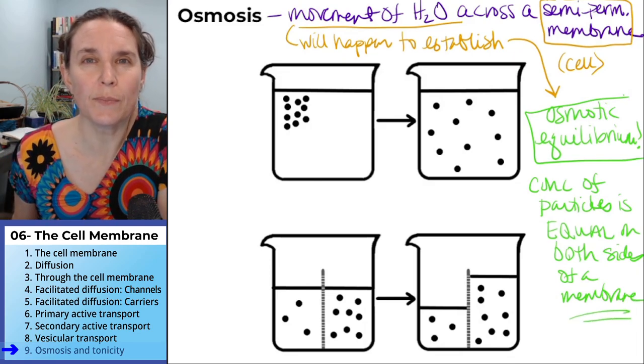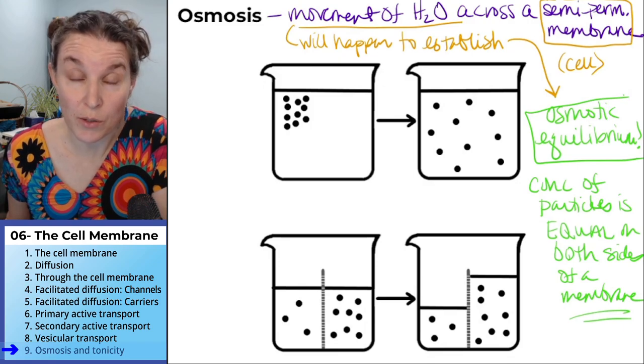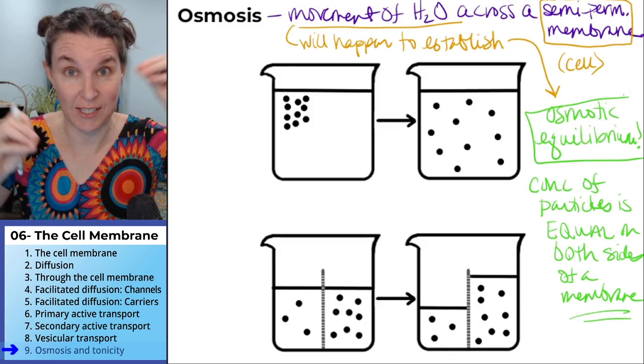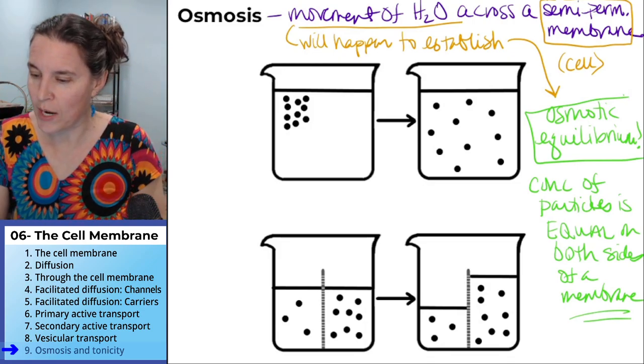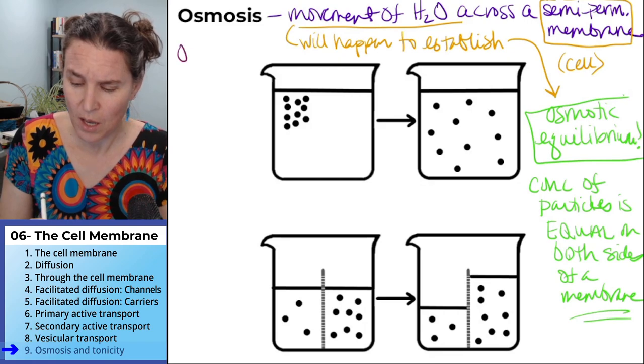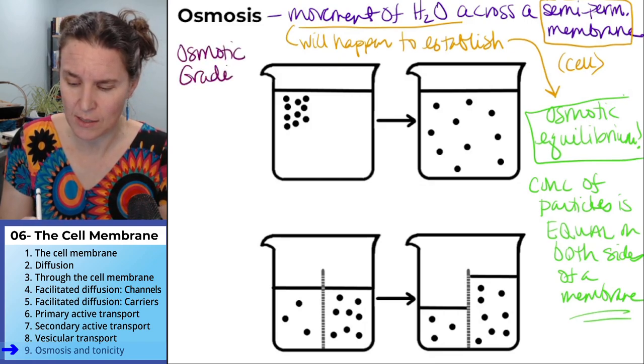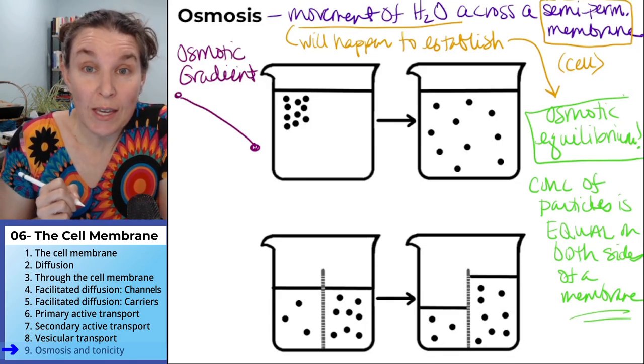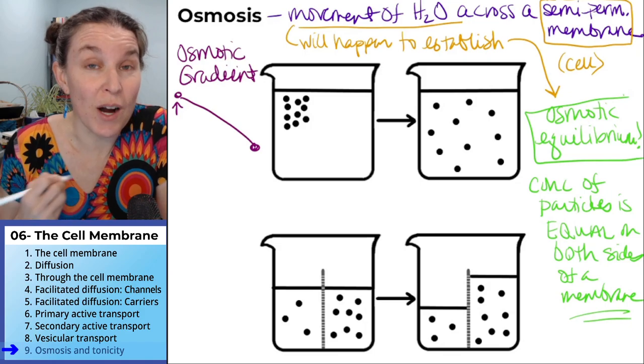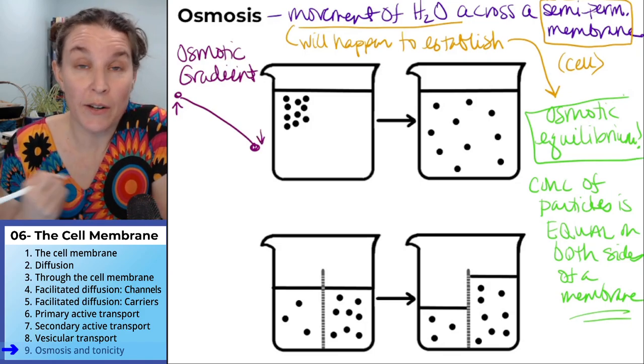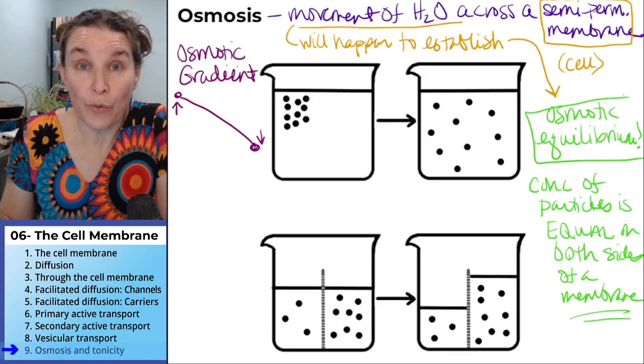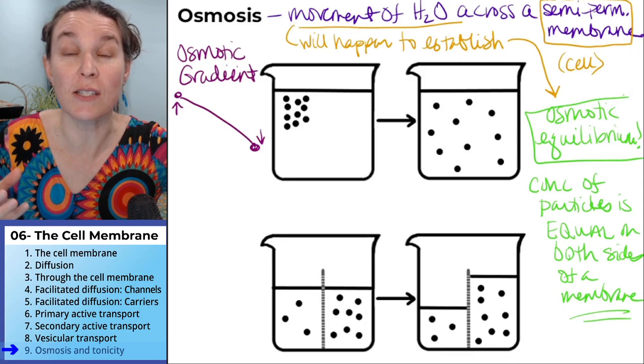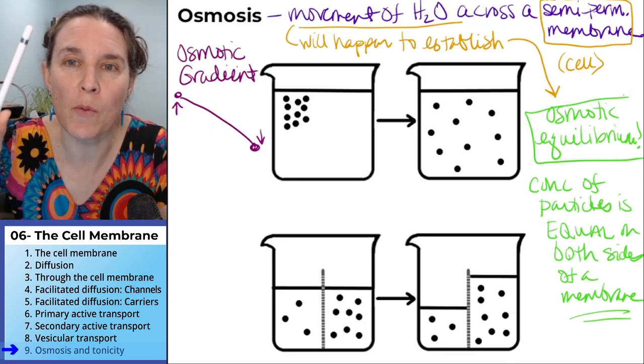Think about that one. If the concentration of the particles on one side or the other side of your semi-permeable membrane, if the concentrations are different, then you have an osmotic gradient. Osmotic gradient - what does that make you think of? It makes you think of an area of high osmolarity or high concentration and an area of low osmolarity or low concentration. Water will move across a semi-permeable membrane if there is an osmotic gradient.